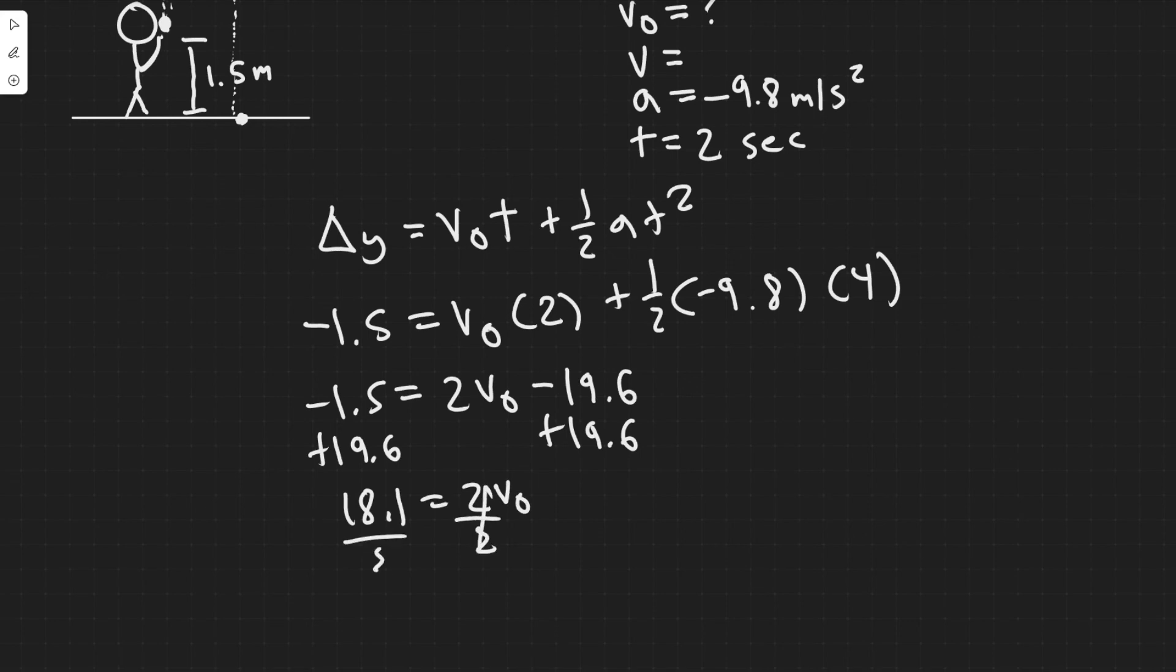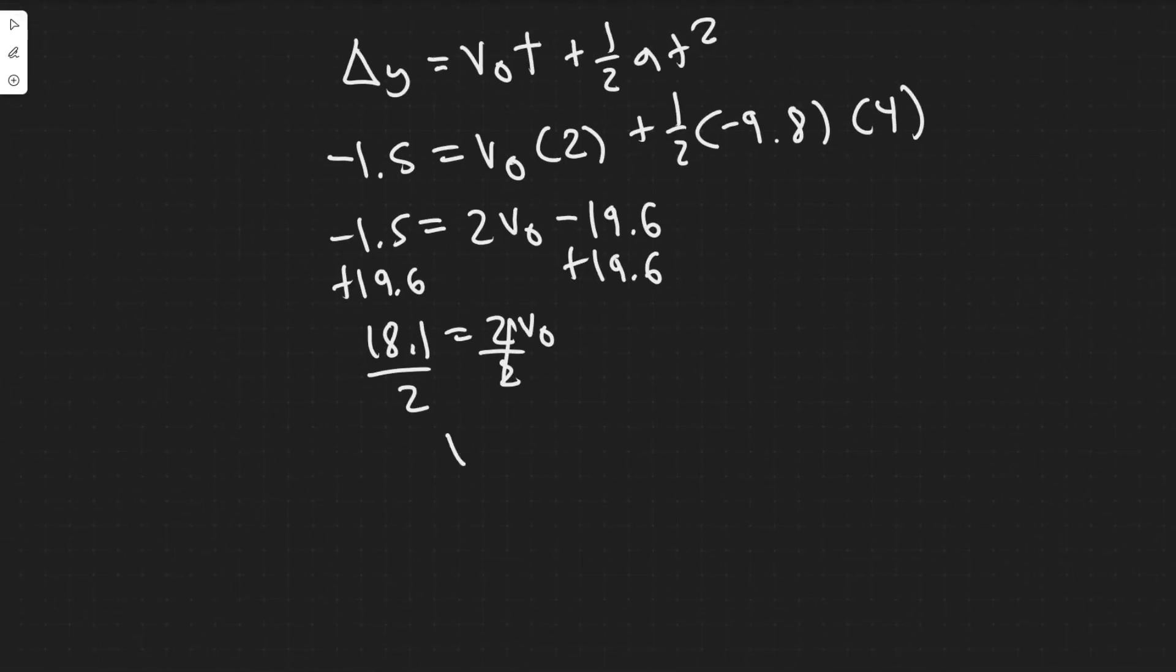Dividing by two, you're going to get that v sub 0 is equal to, this should be 9.05, but let me check, yeah, 9.05. So 9.05, and then the units for velocity are in meters per second. So your answer to this problem is going to be 9.05 meters per second.